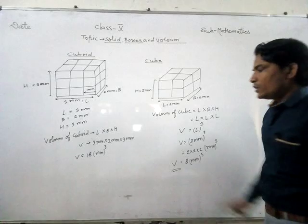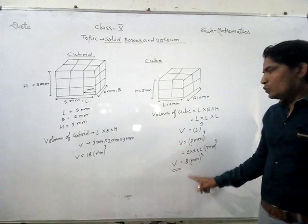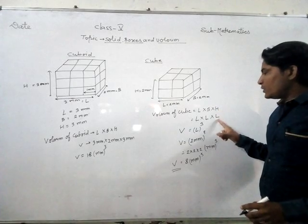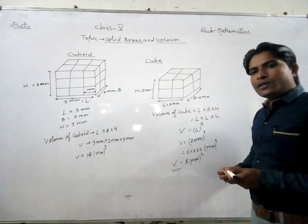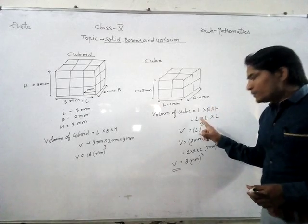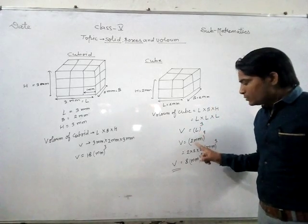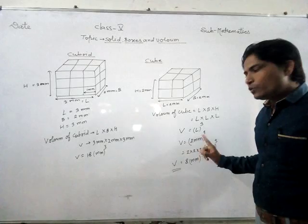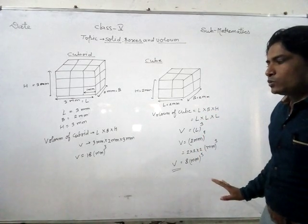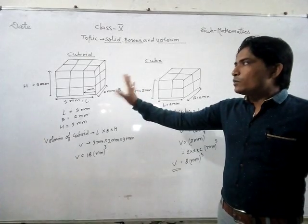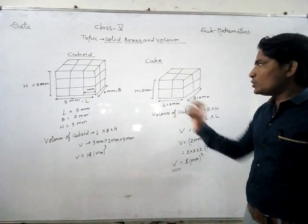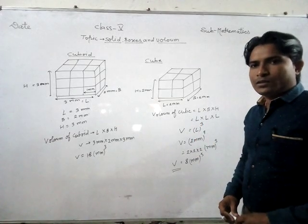So this is the volume of cube. If all sides are equal — breadth equals length, height equals length — then we use length into breadth into height as length into length into length, meaning length cube. Use the value: 2 cube equals 8 mm cube. This is the cuboid concept and that is the cube concept. I hope you understood both concepts easily. Thank you.